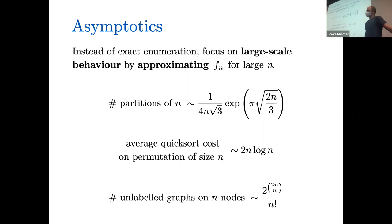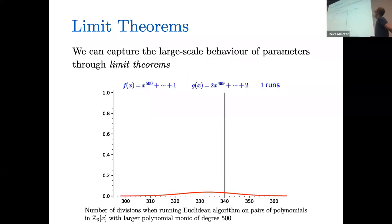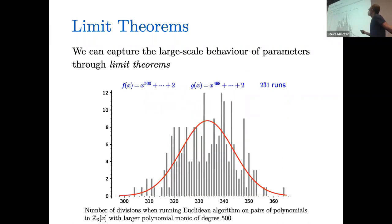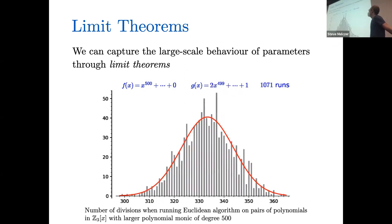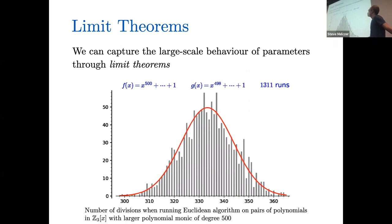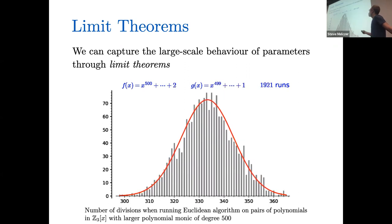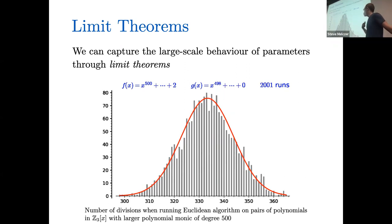I also mentioned multivariate sequences. The equivalent of asymptotics for multivariate sequences are limit theorems. For example, take two random polynomials whose coefficients are in a finite field of three elements, keep generating random pairs of degree up to 500, and run the Euclidean algorithm. When you count the number of divisions, you approach a normal distribution. These kinds of results are pretty beautiful, and they're also useful because they tell you something about your algorithms or the type of object you're trying to study.